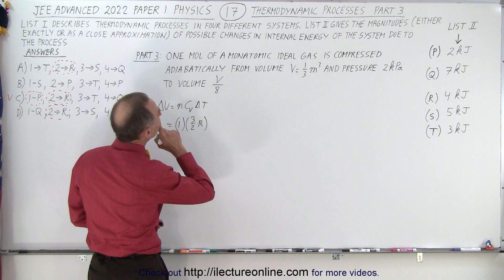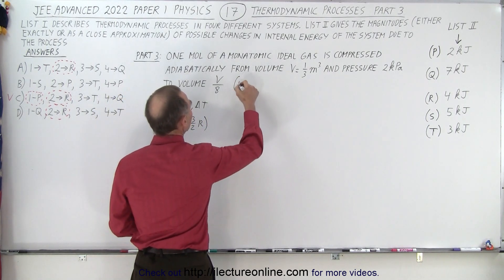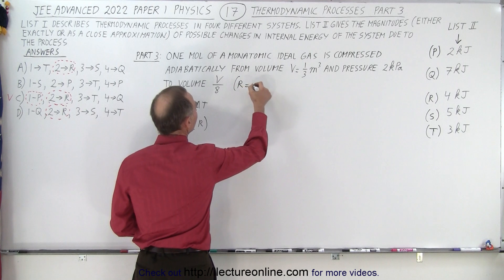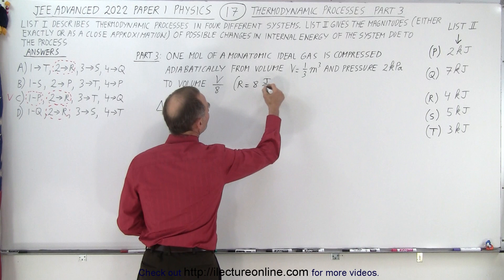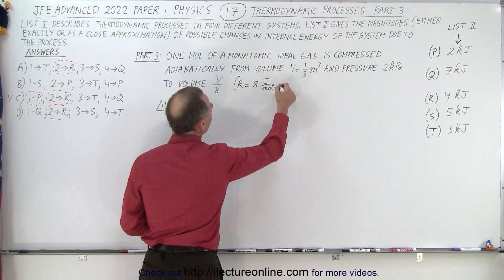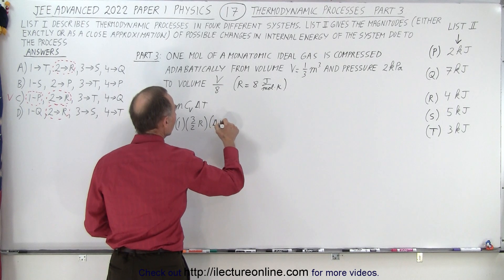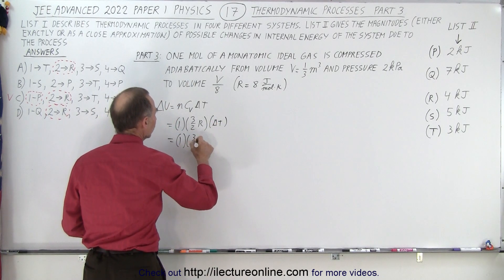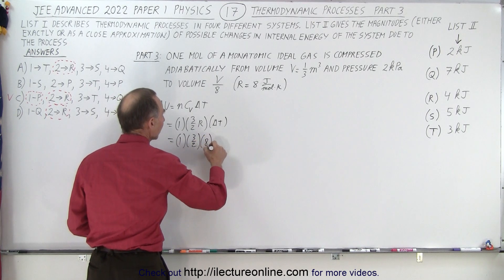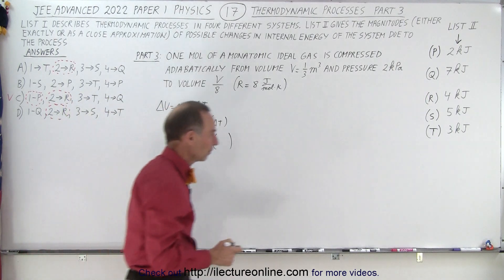We're still supposed to use R equals eight joules per mole times Kelvin. So that would be one times three over two times eight times delta T. And that's the key here is to find the change in the temperature.